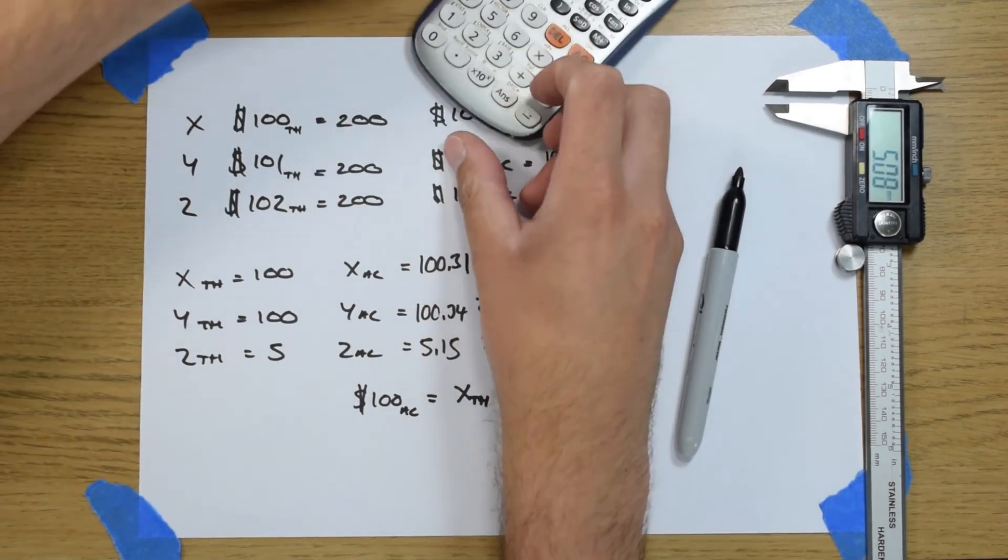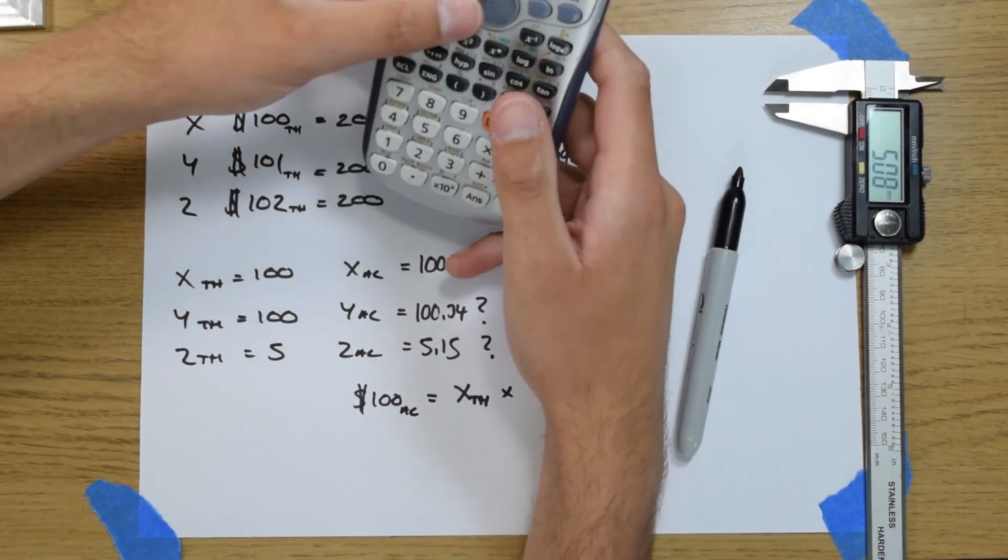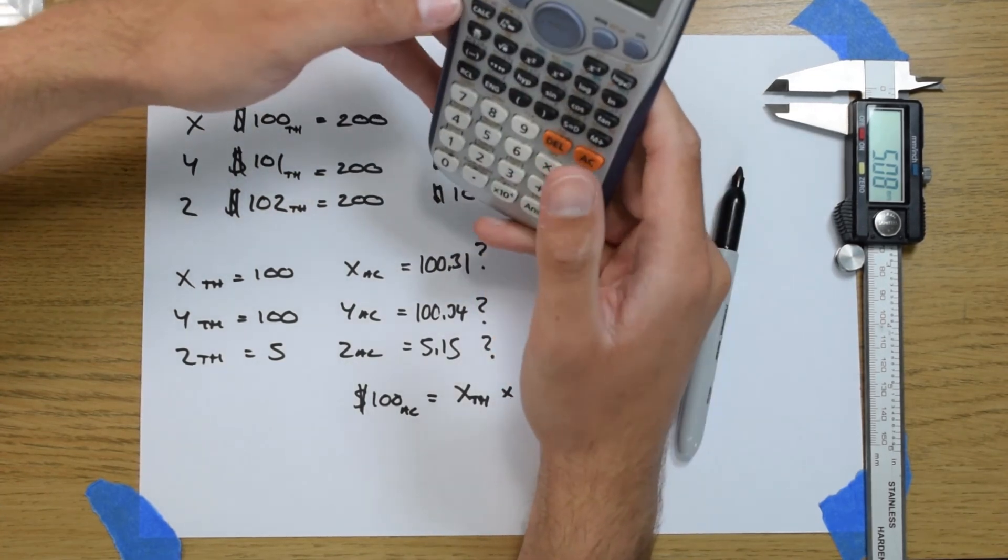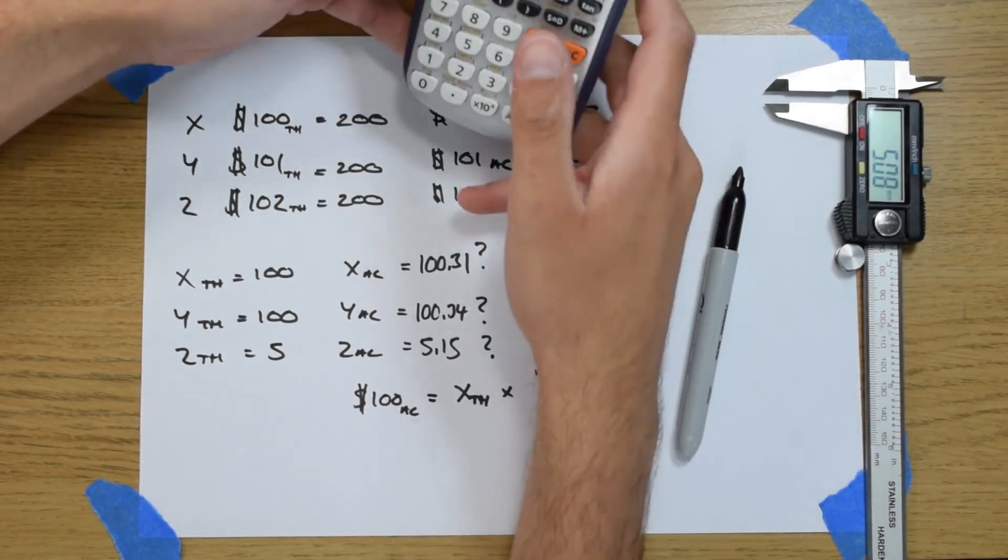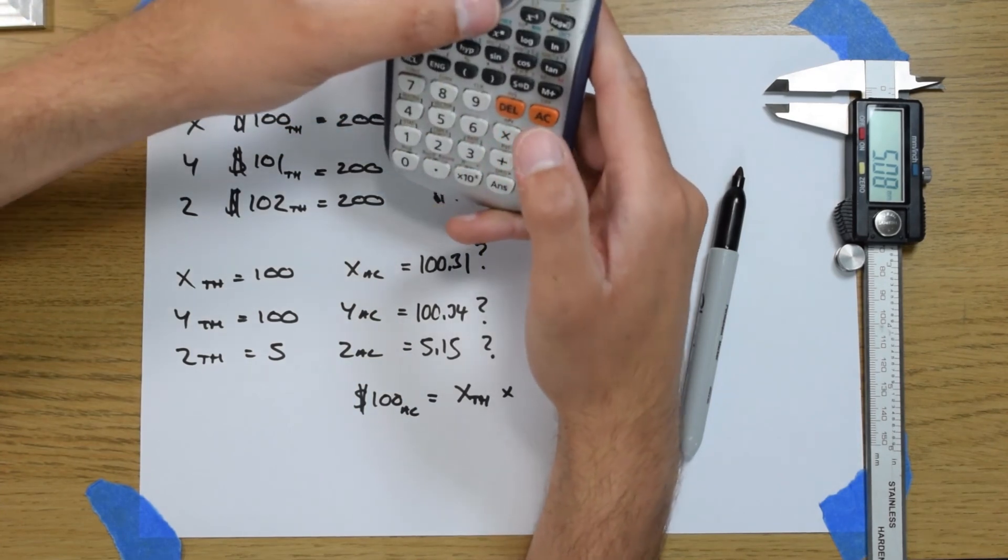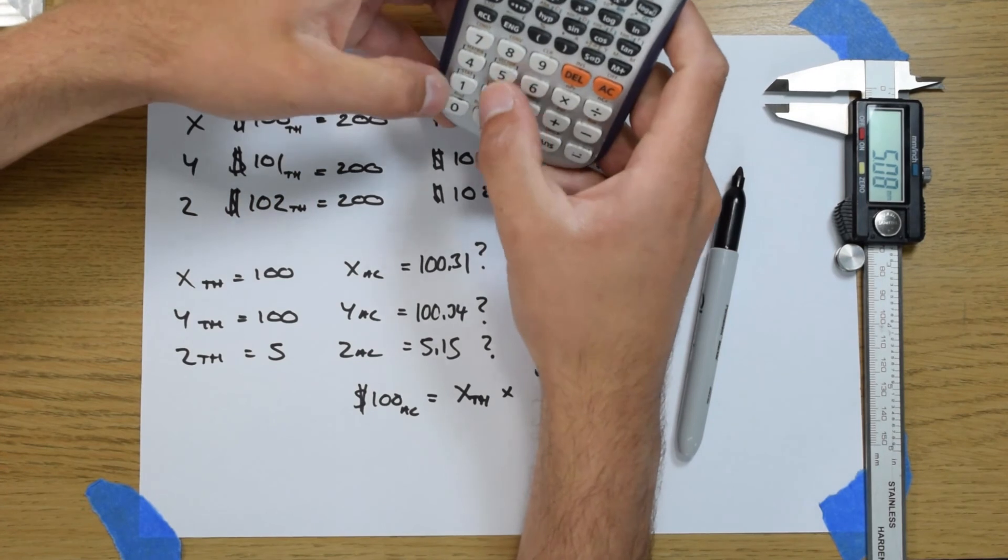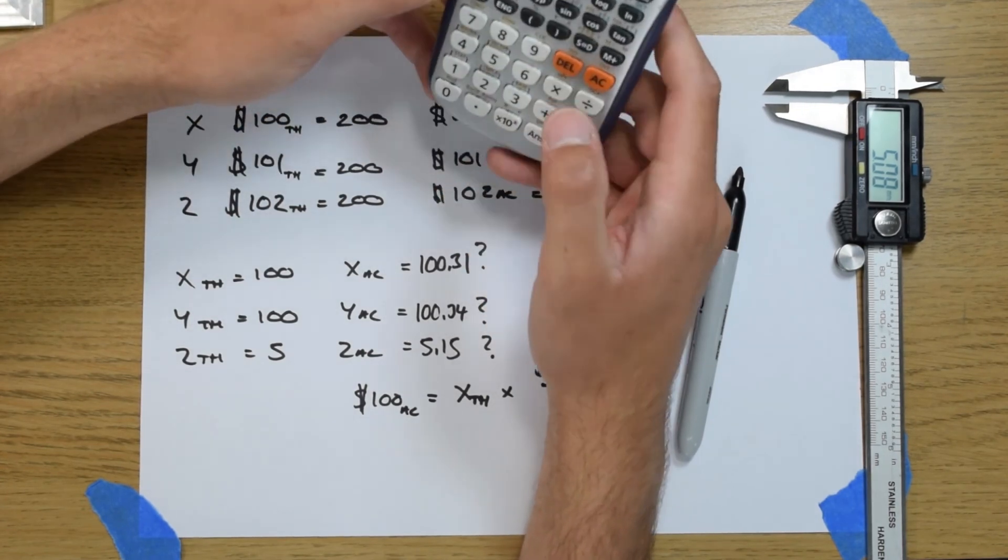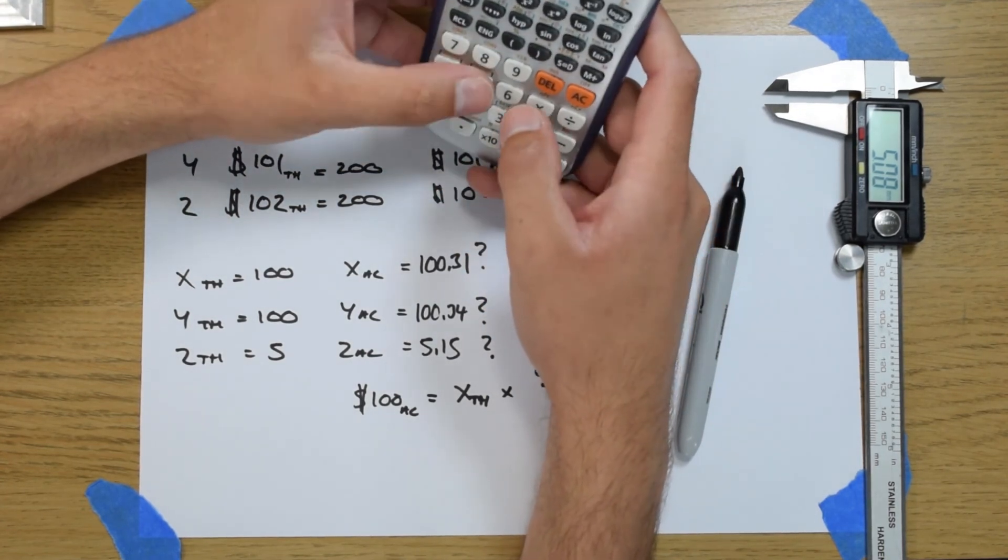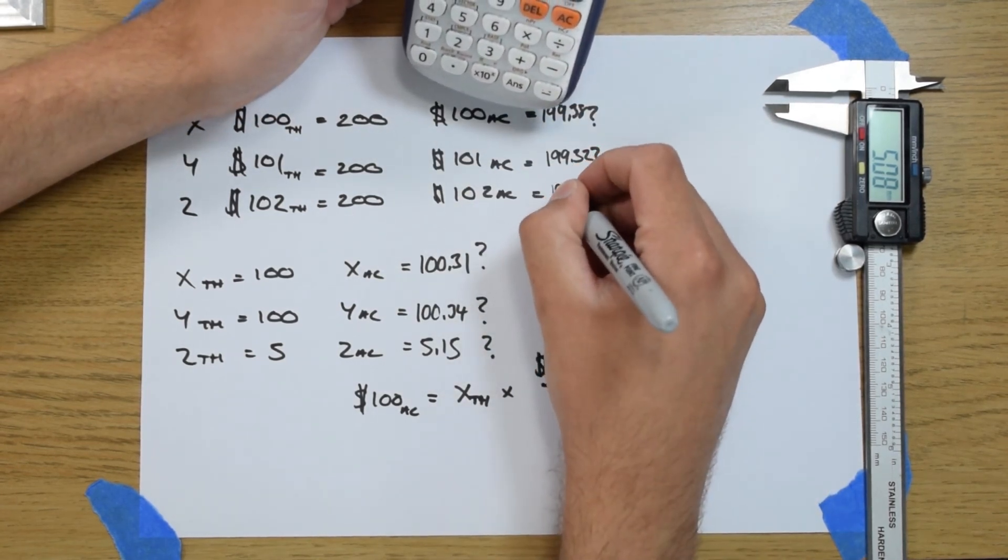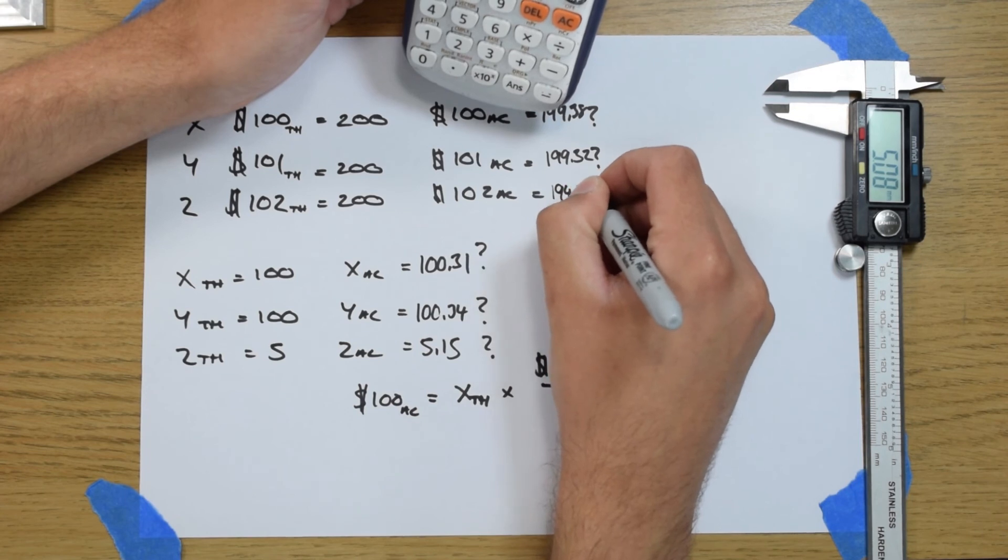So now we need to calculate the Z axis one. So use the same calculation as the X and Y. So we will do the $100 theoretical which is 200, divided by the Z actual value, so 5.15, times by the Z theoretical value. So that gives us steps per millimetre of 194.17.